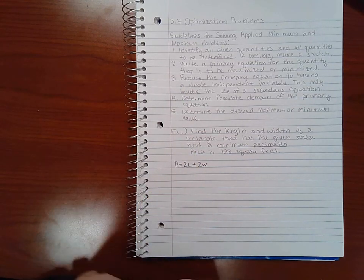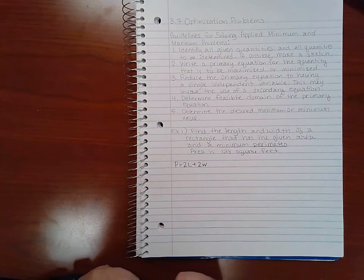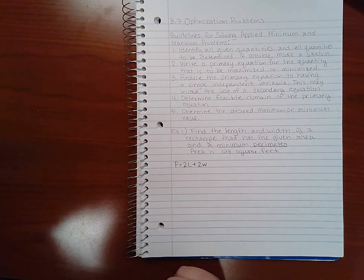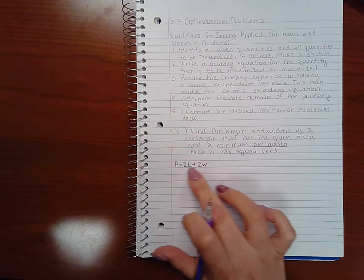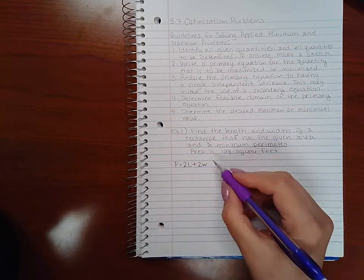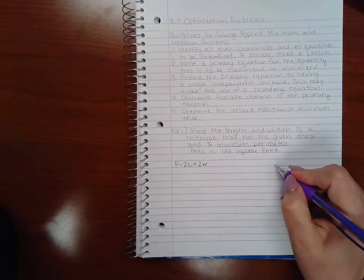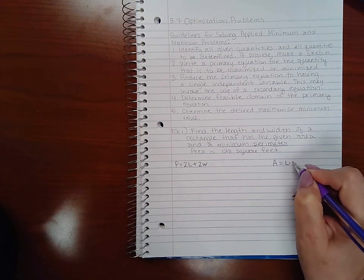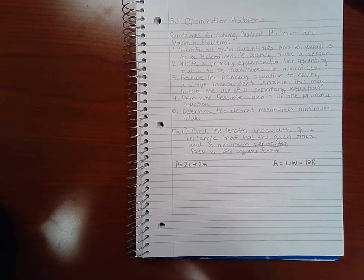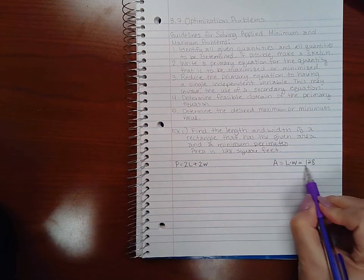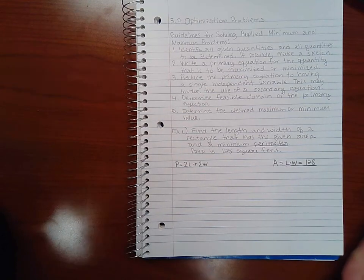Part two is to write down my primary equation. However, I may need to use a secondary equation to put this in one variable only. That second equation is the area. So I know that the area is length times width, but I also know that that's 128 square feet.